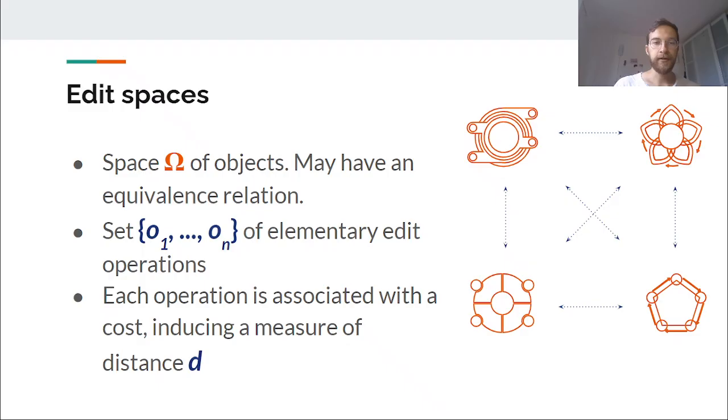Let's start with the preliminaries. We will call an edit space any space Ω of objects or data structures with an equivalence relation and a set of edit operations that allow the transformation of any object into one another. Each operation will be associated with a cost, so that we may induce a notion of distance within objects by considering minimum cost paths between them.